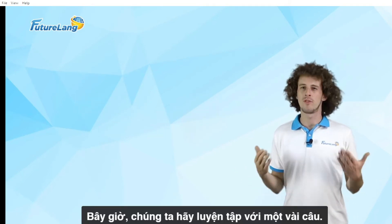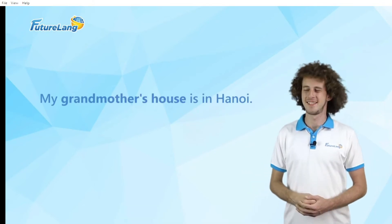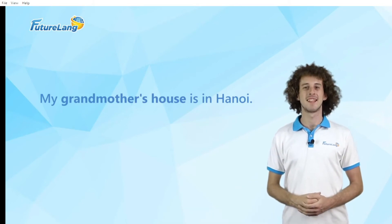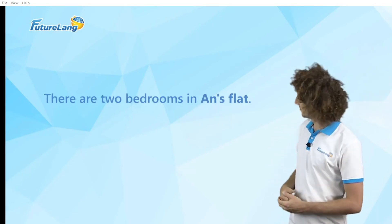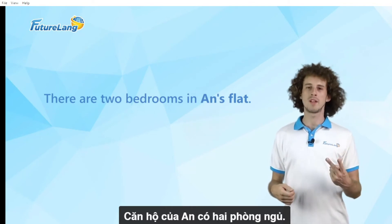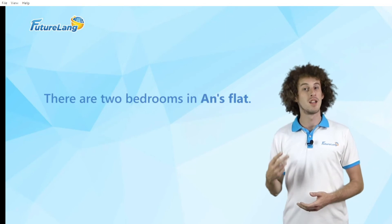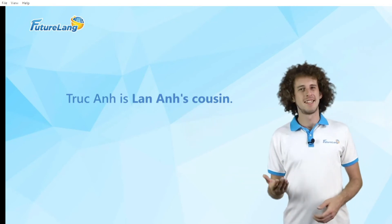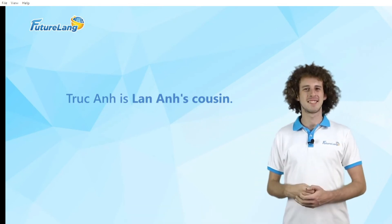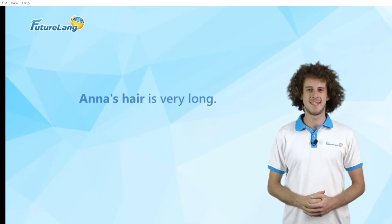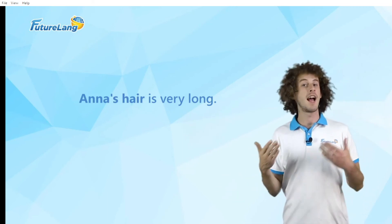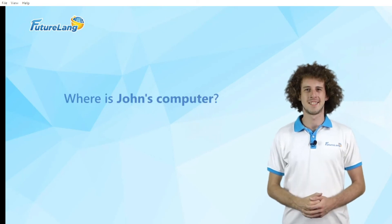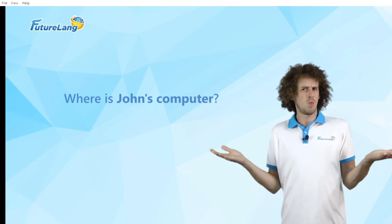Now let's practice these with a few sentences. My grandmother's house is in Hanoi. There are two bedrooms in Ann's flat. Perfect! Anna's hair is very long. Where is John's computer?